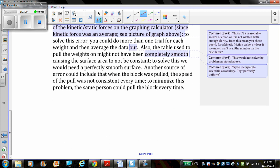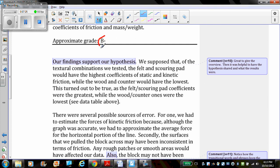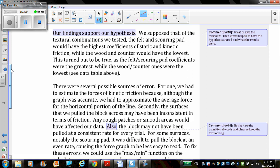Let's look at an excellent conclusion. This person states our findings support our hypothesis. We suppose that of the textural combinations we tested the felt and the scouring pad would have the highest coefficients of static and kinetic friction, while the wood in the counter would have the lowest. This turned out to be true as the felt scouring pad coefficients were the greatest, while the wood counter ones were the lowest. See the data table above.